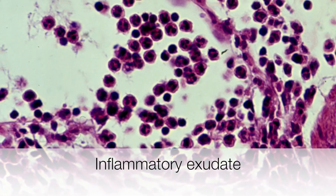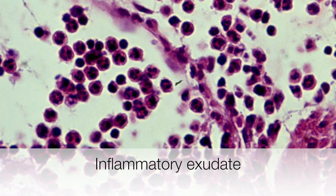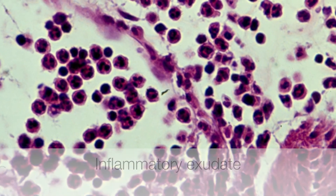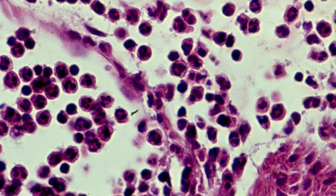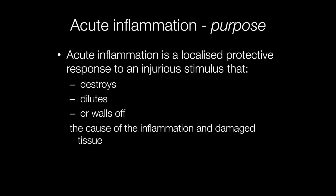This is the microscopic appearance of an inflammatory exudate. You can see the neutrophil polymorphs spilling out into the adjacent tissues through the capillary wall. Acute inflammation is a localised protective response that destroys, dilutes, or walls off the injurious stimulus.